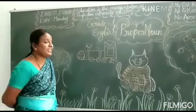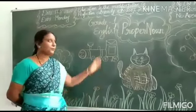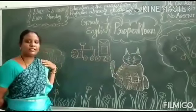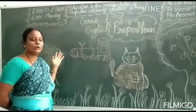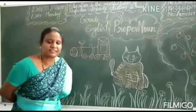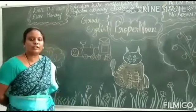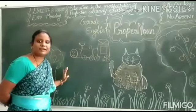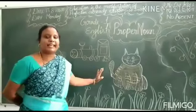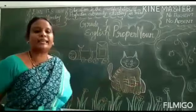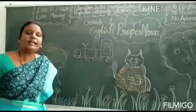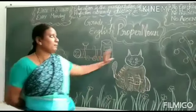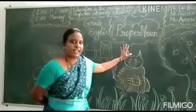Today we are going to see about proper noun, grammar part. What is a noun? Noun is a naming word. You all know noun is a naming word. It is the name of a person, place, animal — all the names are called noun. In detail we are going to see proper noun today.